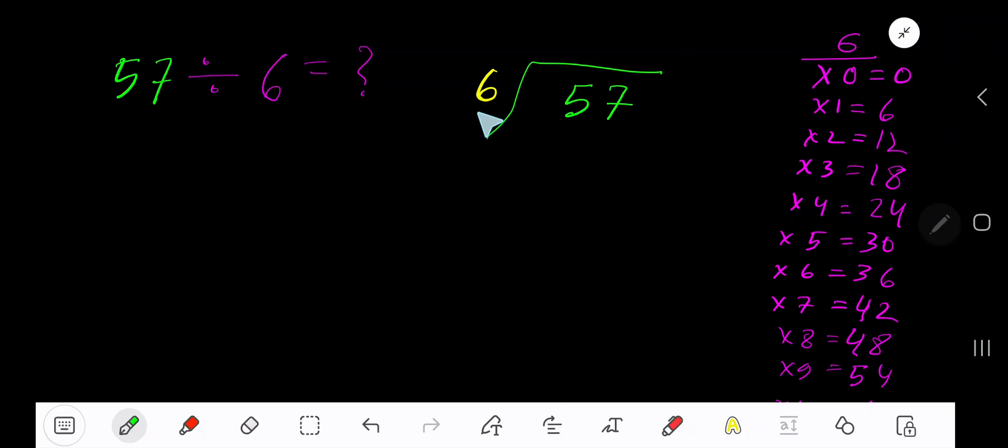57 divided by 6. Here, 6 is the divisor, so we need the multiplication table of 6: 6 times 0 is 0, 6 times 1 is 6, 6 times 2 is 12, 6 times 3 is 18, 6 times 4 is 24.